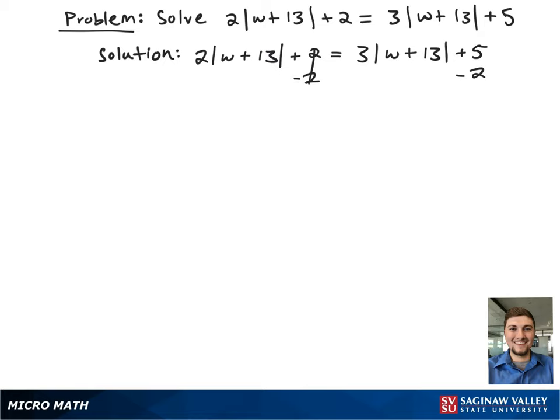We're going to begin by subtracting 2 from both sides to get the single term by itself. We're also going to subtract 3 times the absolute value of w plus 13 from both sides to get the absolute value term by itself.